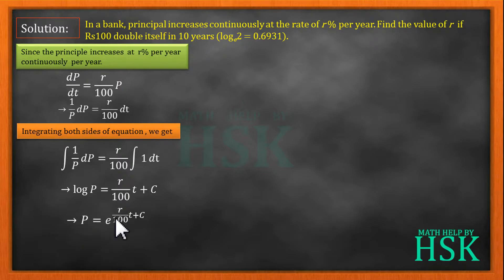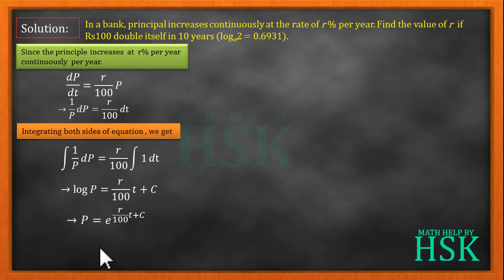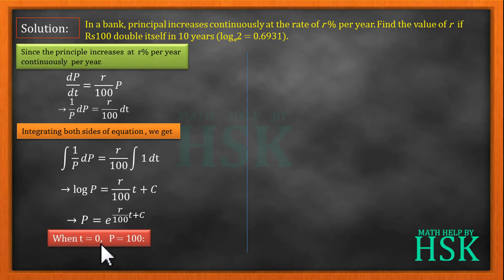we obtain p equal to e to the power of (r/100 · t + c). Now to calculate the value of r, we require the value of c first. To find c, we apply the initial condition given: when time is 0, the principal was 100. So initially, principle P = 100.